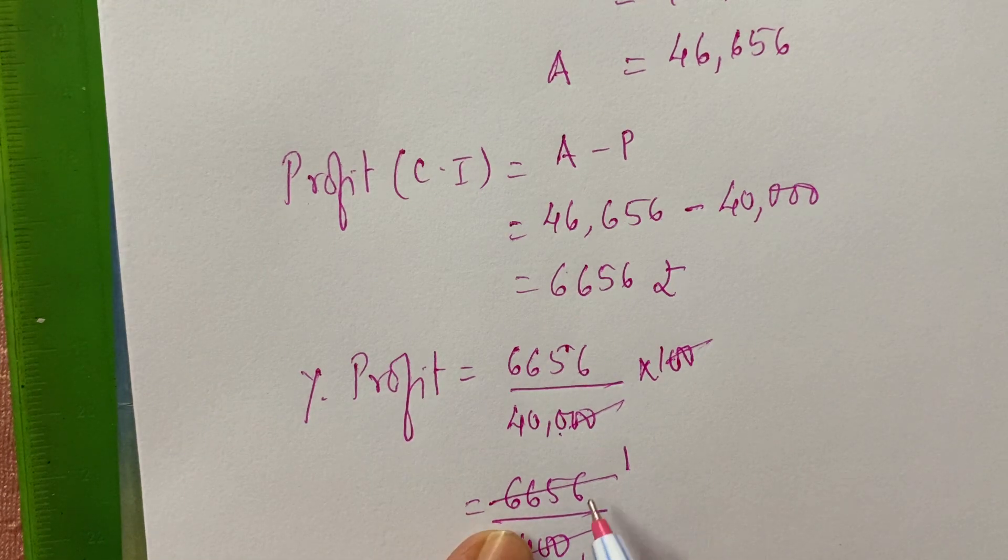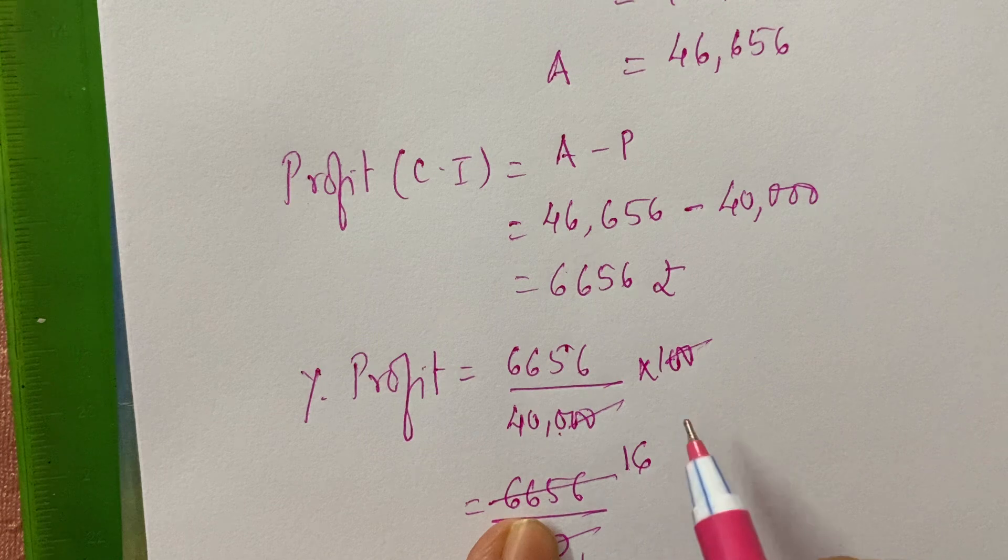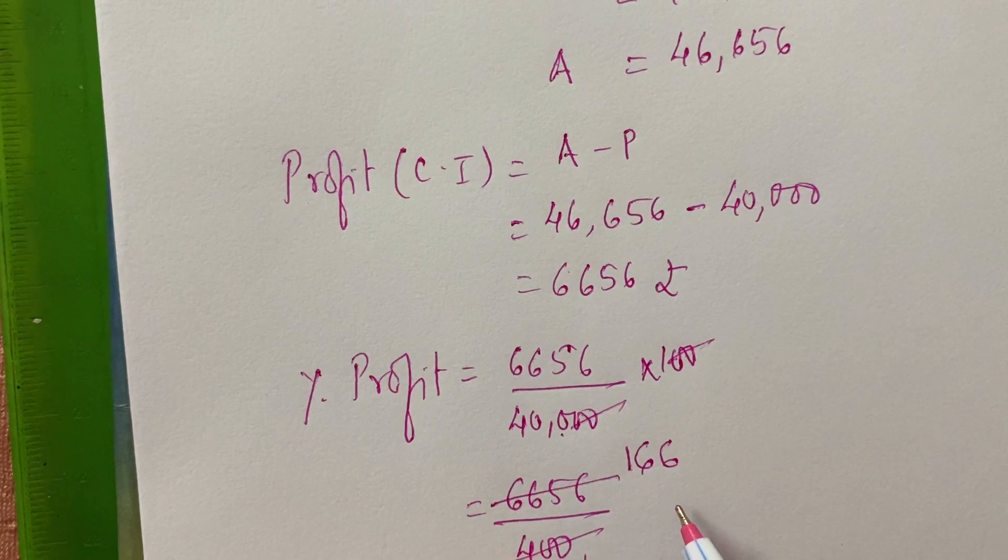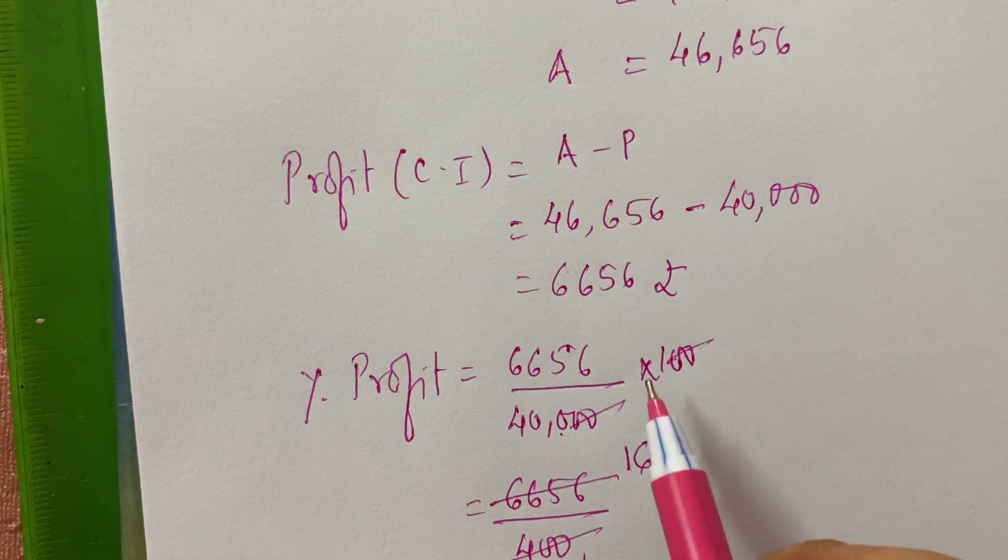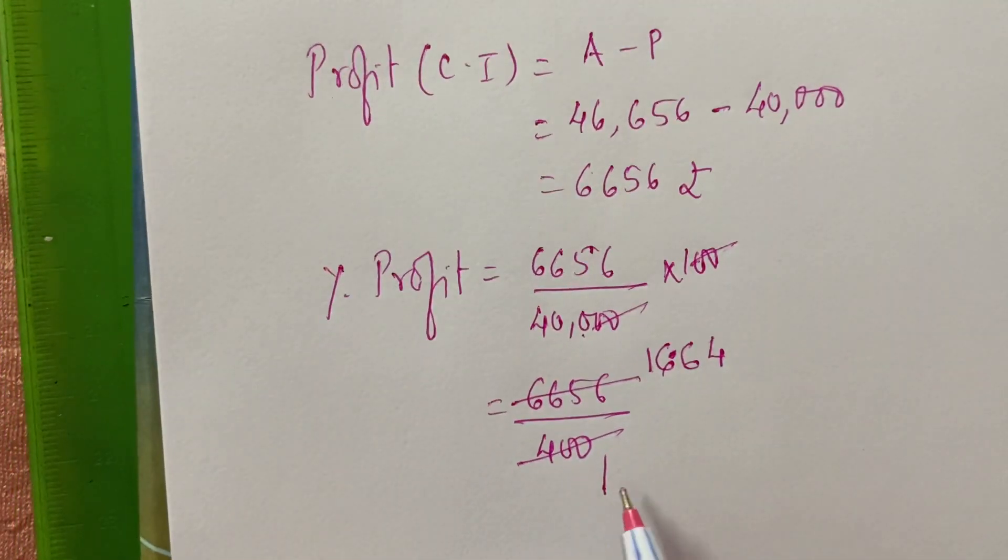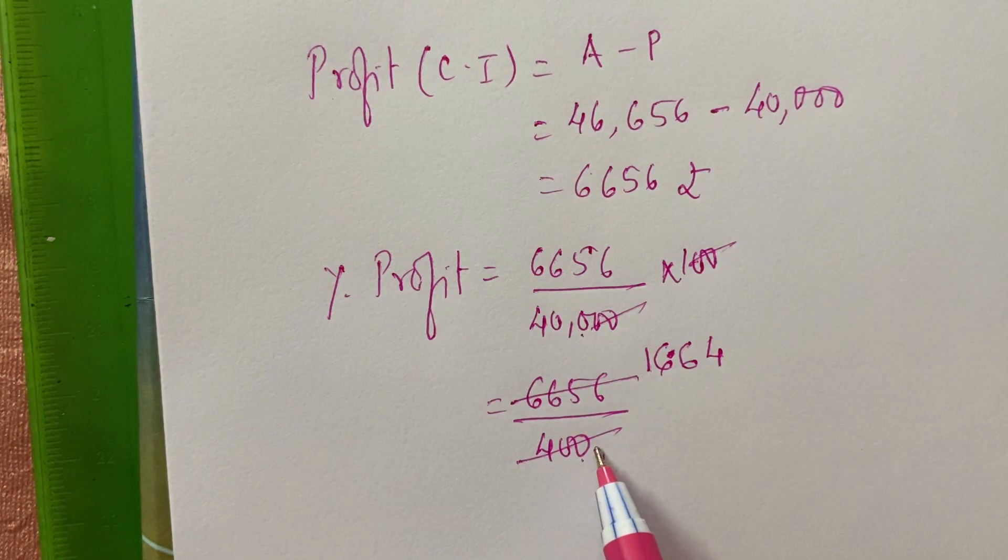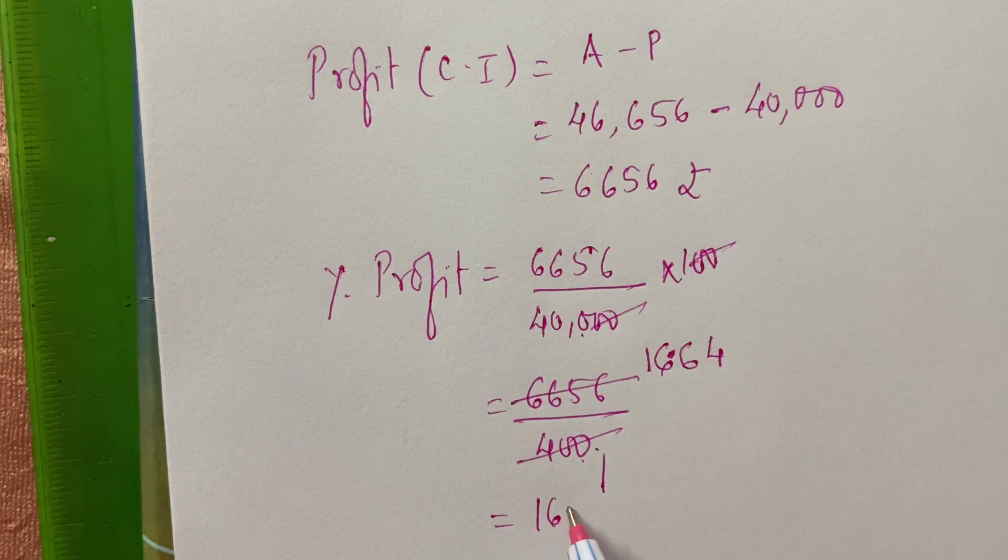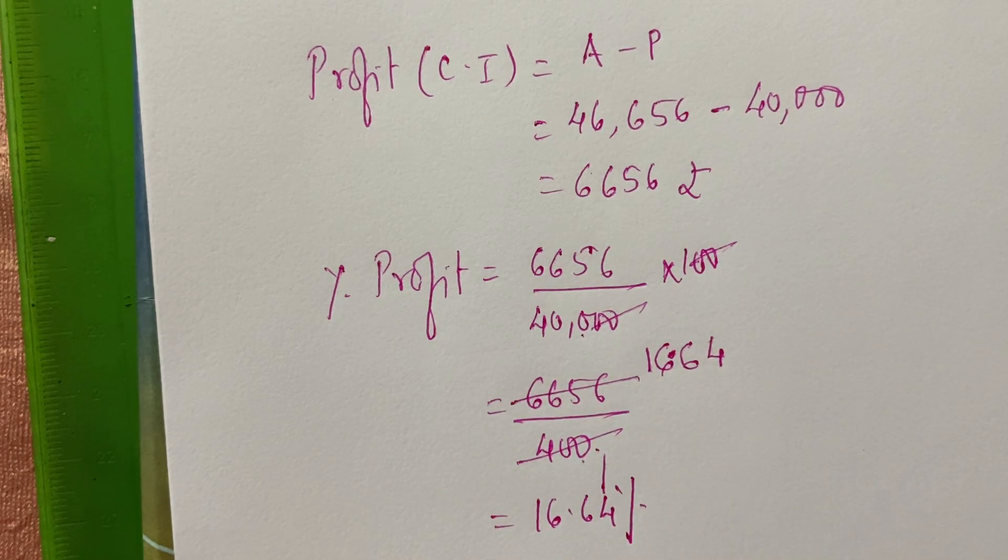So, this if you multiply 1s are 4, 1s are 4. Remainder is 2. 4, 6 are 24. Remainder is 2. Again, 4, 6 are 24. And decimal point will come. 4, 6 are 24. Remainder is how much? 1. So, that will give you 4, 4s are 16. So, out of 100. In the denominator, there is 100. So, after 2 digits, you will put the decimal point. 16.64% is his profit.